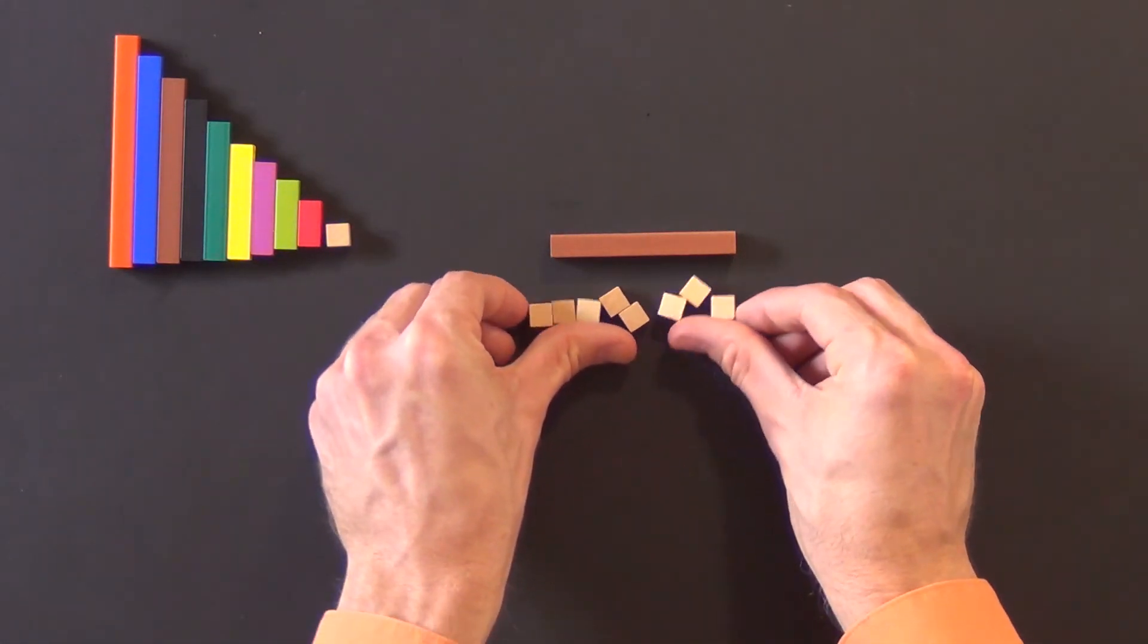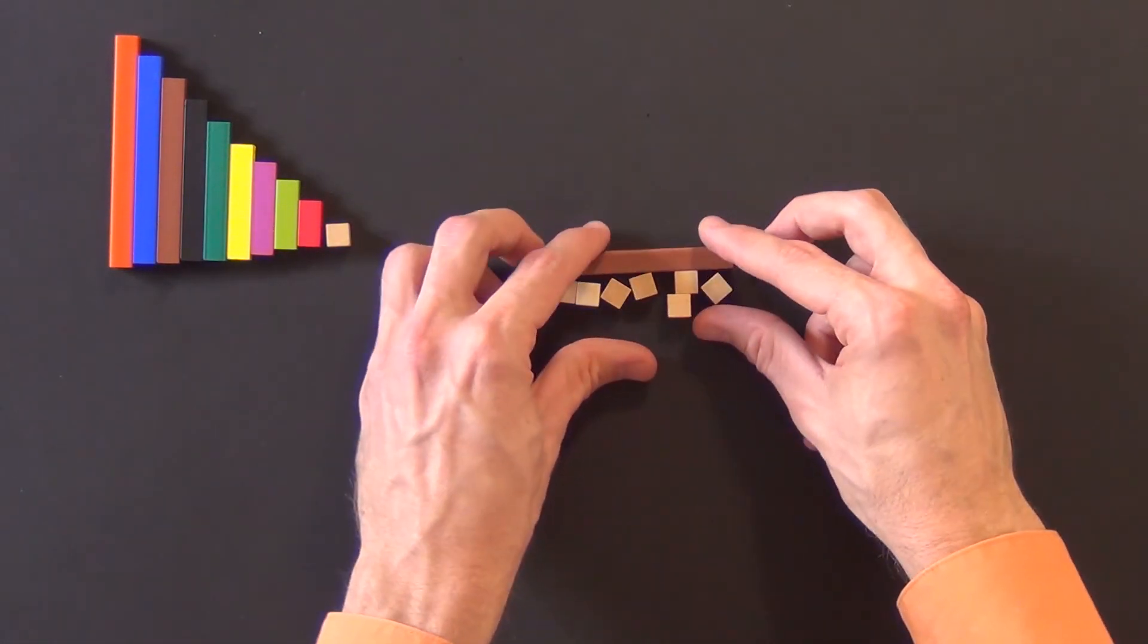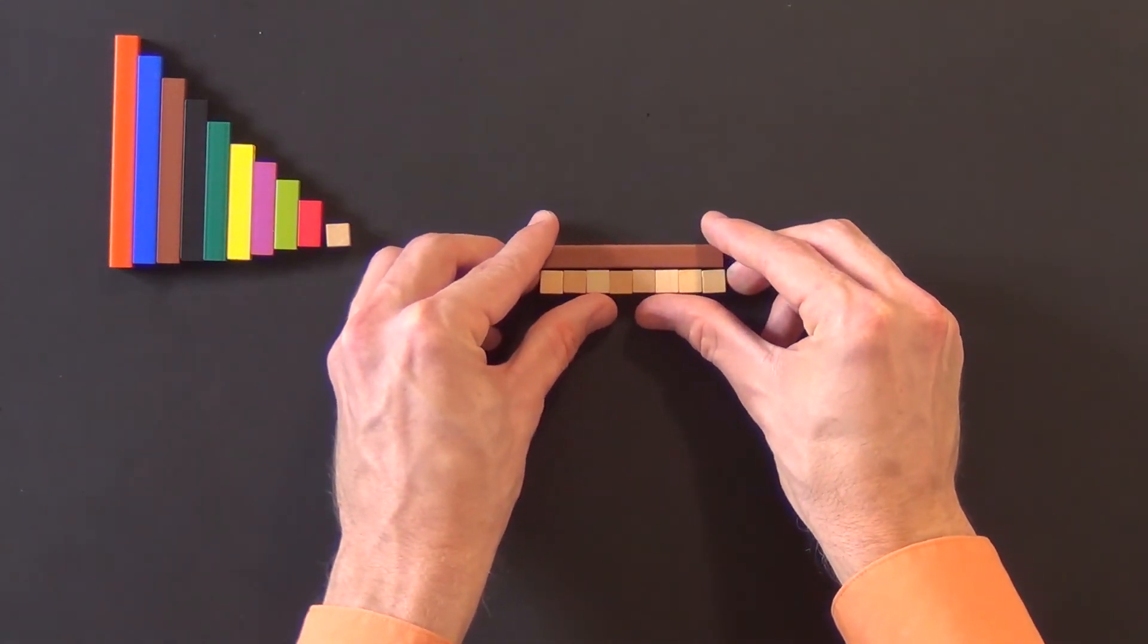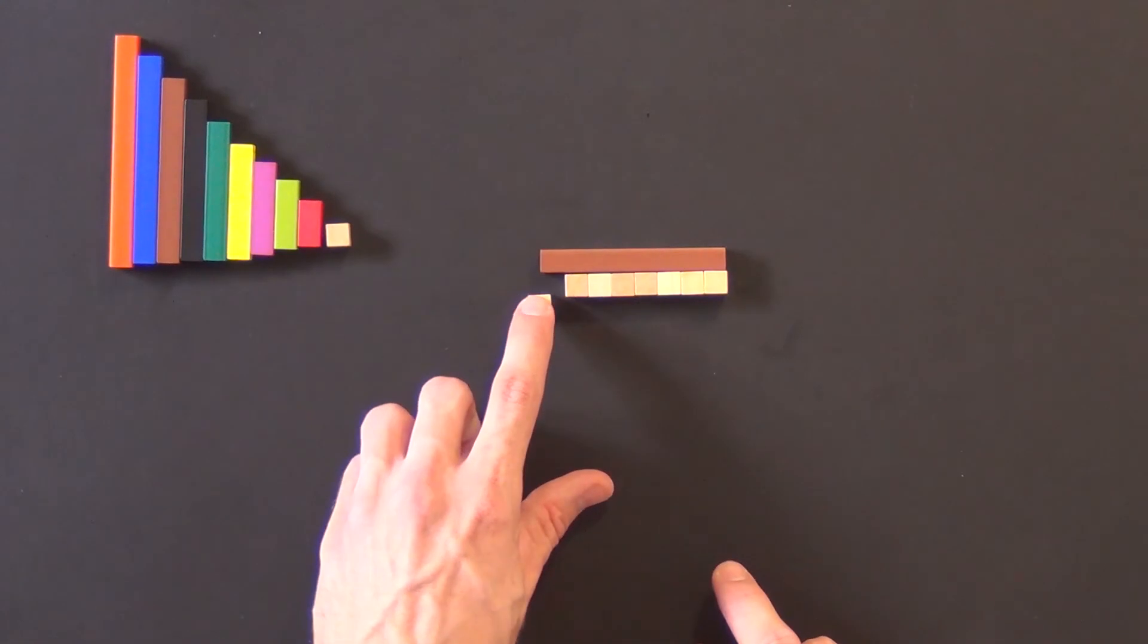Because the whites repeat themselves eight times to equal the length of the brown, they represent eighths. Each one is an eighth.